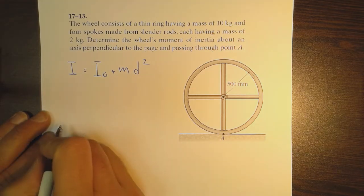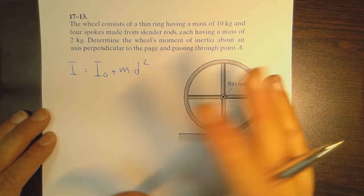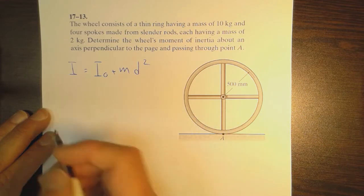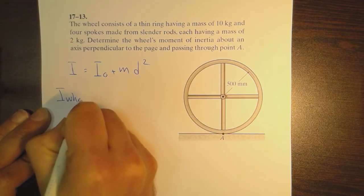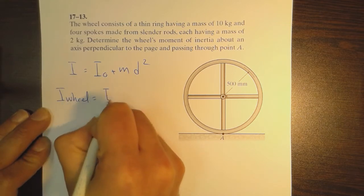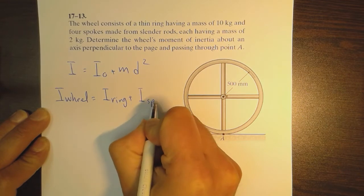Here we can deal with the wheel by subdividing it into two entities. For the wheel, I_wheel equals I_ring plus I_spokes.